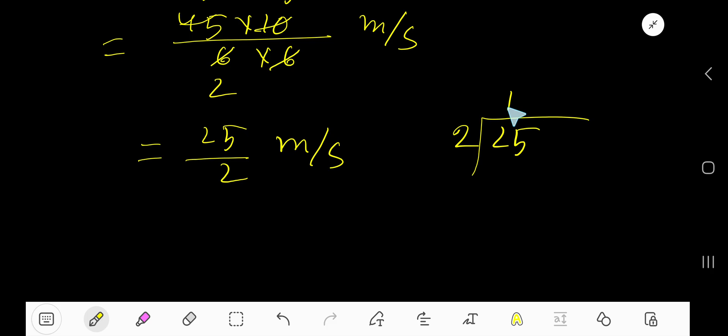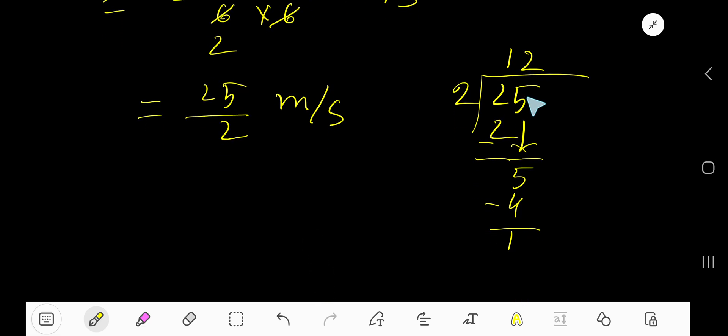2 goes into 2 one time. 1 times 2 is 2, subtract to get 0. Bring down this 5. 2 goes into 5 how many times? 2 times. 2 times 2 is 4, subtract to get 1. To continue this process, let me add a decimal point and add 0. Bring down the first 0. Before the 0 there is a decimal. The decimal must come to the answer directly. 2 goes into 10, 5 times. 5 times 2 is 10, subtract 0. So our answer is 12.5 meters per second.